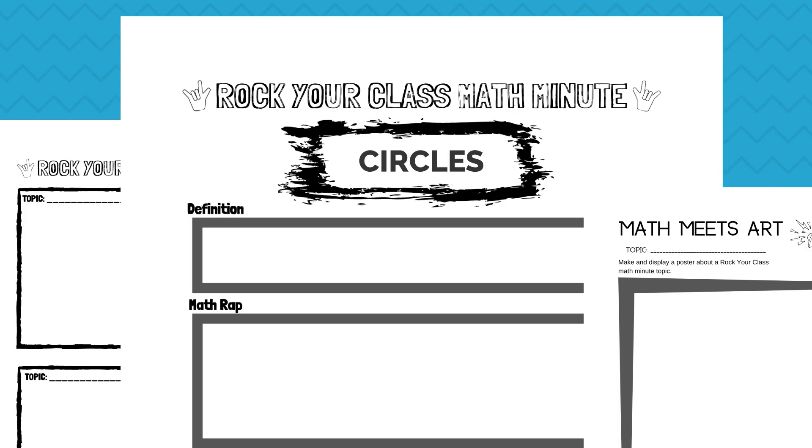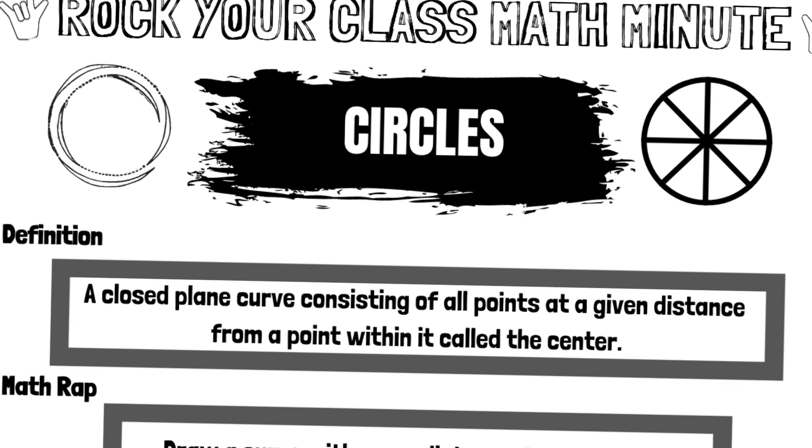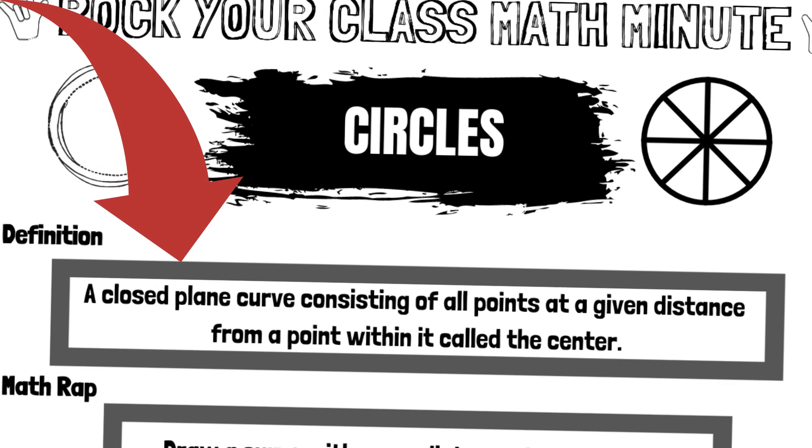Circles. What does the dictionary say? A closed plane curve consisting of all points at a given distance from a point within it called the center.